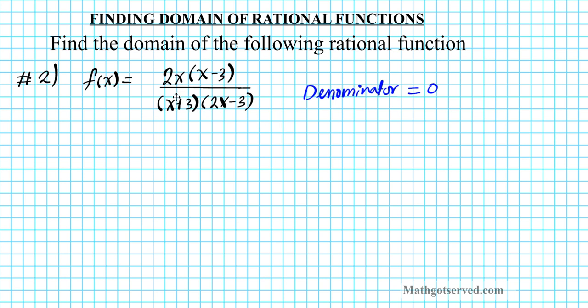Taking a look at this example, what is the denominator? The denominator is the product of these two quantities, x plus 3 times 2x minus 3. So we'll set it equal to zero and then we'll solve this quadratic equation. When we solve this quadratic equation, our answers should be excluded from the domain and we'll have the domain of this function.